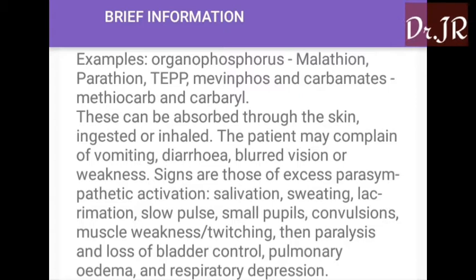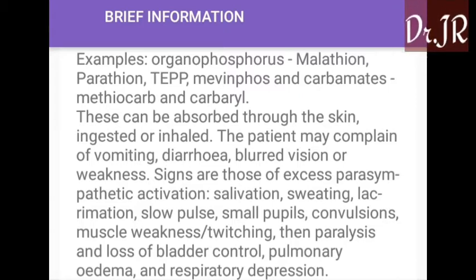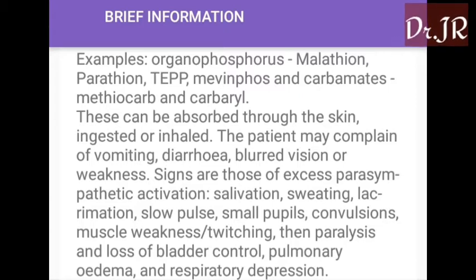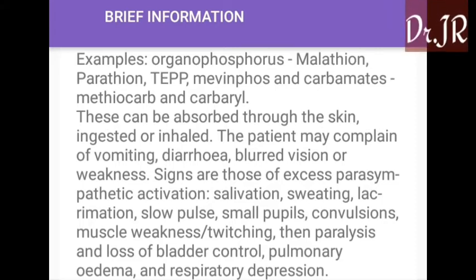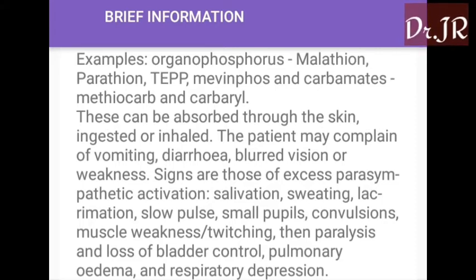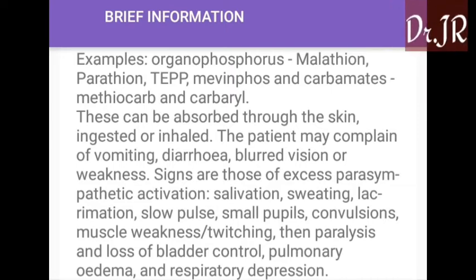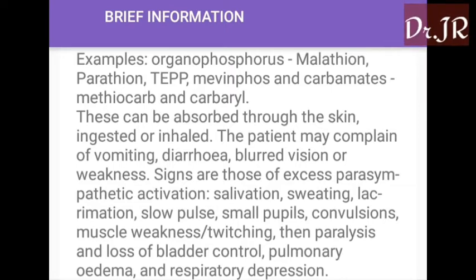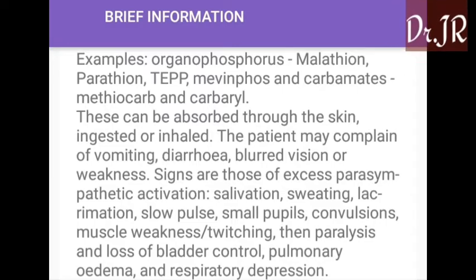The poison can also be ingested or inhaled. The patient may complain of weakness. Signs are those of excessive parasympathetic activation: salivation, sweating, lacrimation, slow pulse, small pupils, convulsions, muscle weakness, breathing difficulty, then paralysis, and loss of bladder control, and pulmonary oedema.